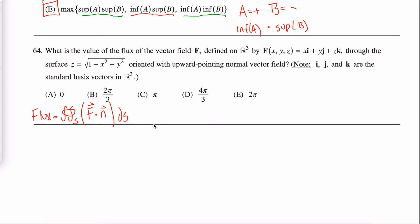Alright, solution to problem 64 off the math subject GRE practice test. What we're asked in 64 is to find the value of the flux of the vector field F, and the vector field is relatively straightforward. It's just x, y—I'm going to write this a little bit differently. There we go. The vector field is just defined according to this vector here.